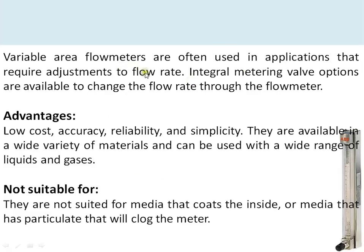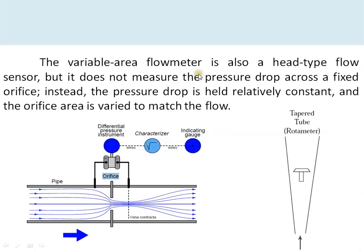Variable area flow meters are often used in applications that require adjustment to flow rate, because most rotameters come with a needle valve, so along with flow indication they also provide a means of controlling the flow rate. The advantages of rotameters are low cost, accuracy, reliability, and simple construction. They are not suitable for media that coat the inside of the tube or media containing particulates, as these will obstruct the movement of the float and give incorrect readings.